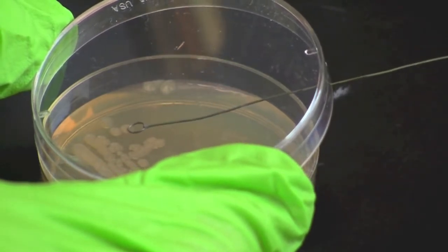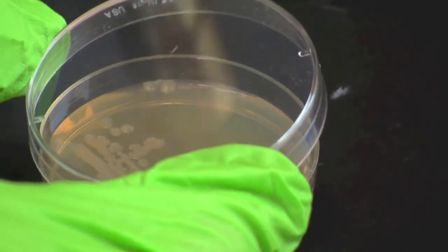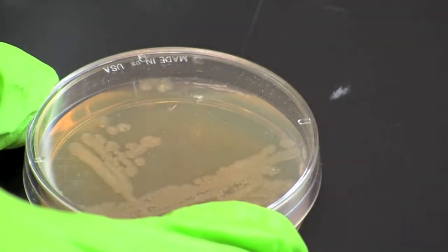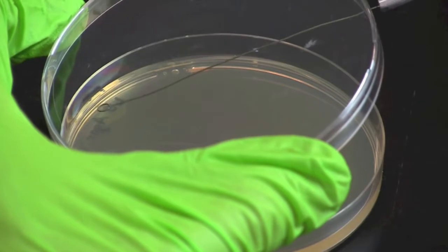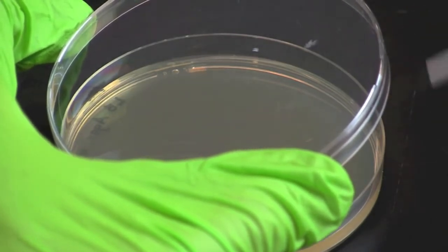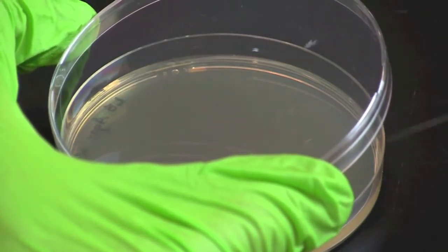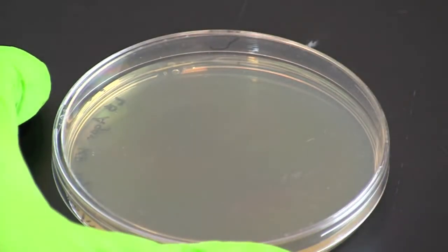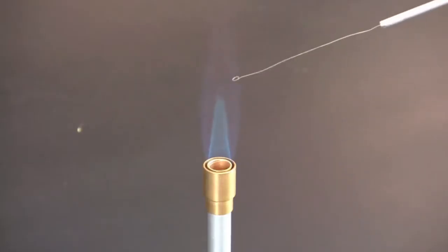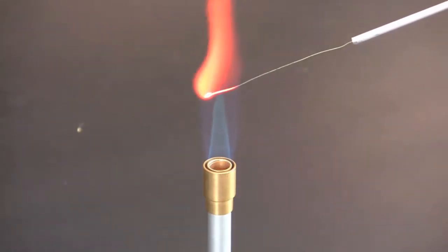Gently scrape a colony from the surface of the plate so that it collects on the loop. Transfer the bacteria to your LB agar plate and gently rub the loop back and forth across the top left corner of the plate about ten times. Stay in the top left quadrant and do not break the surface of the agar. When finished, flame the loop.